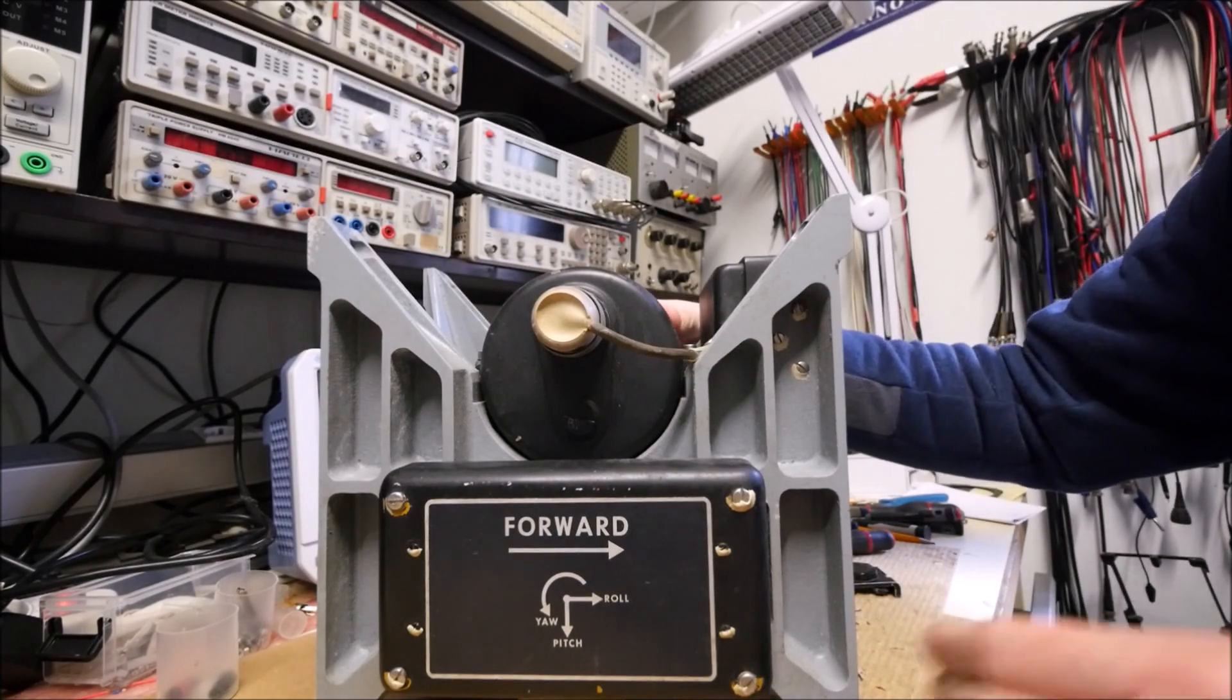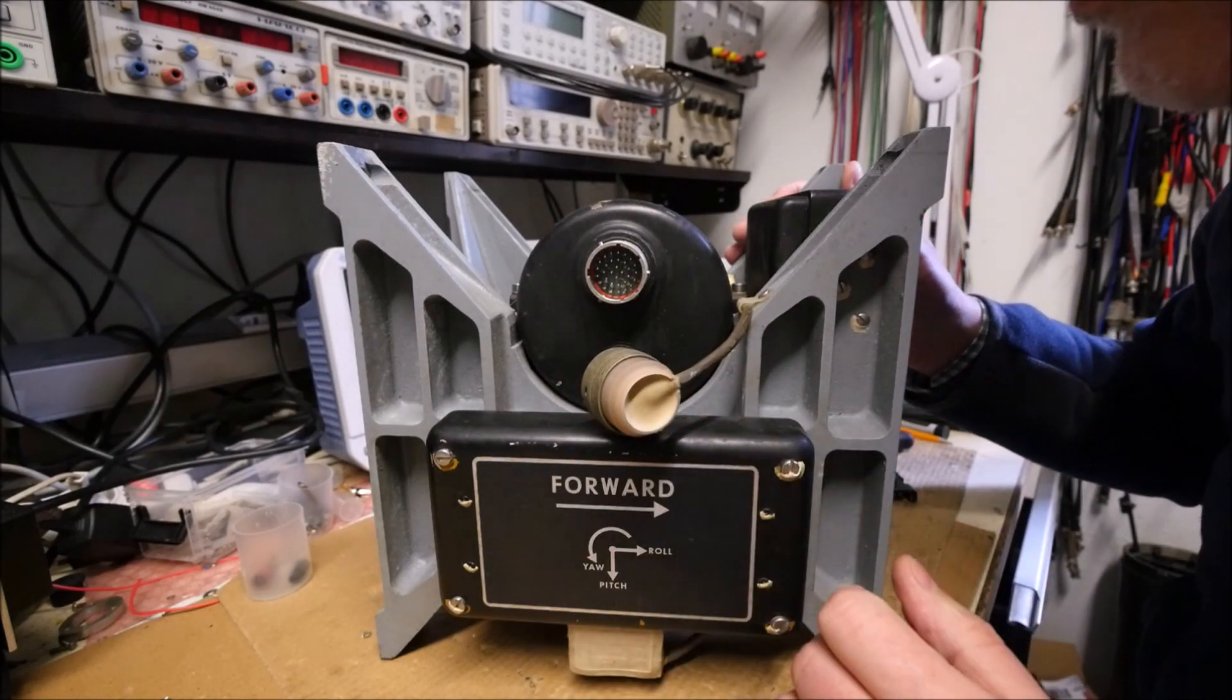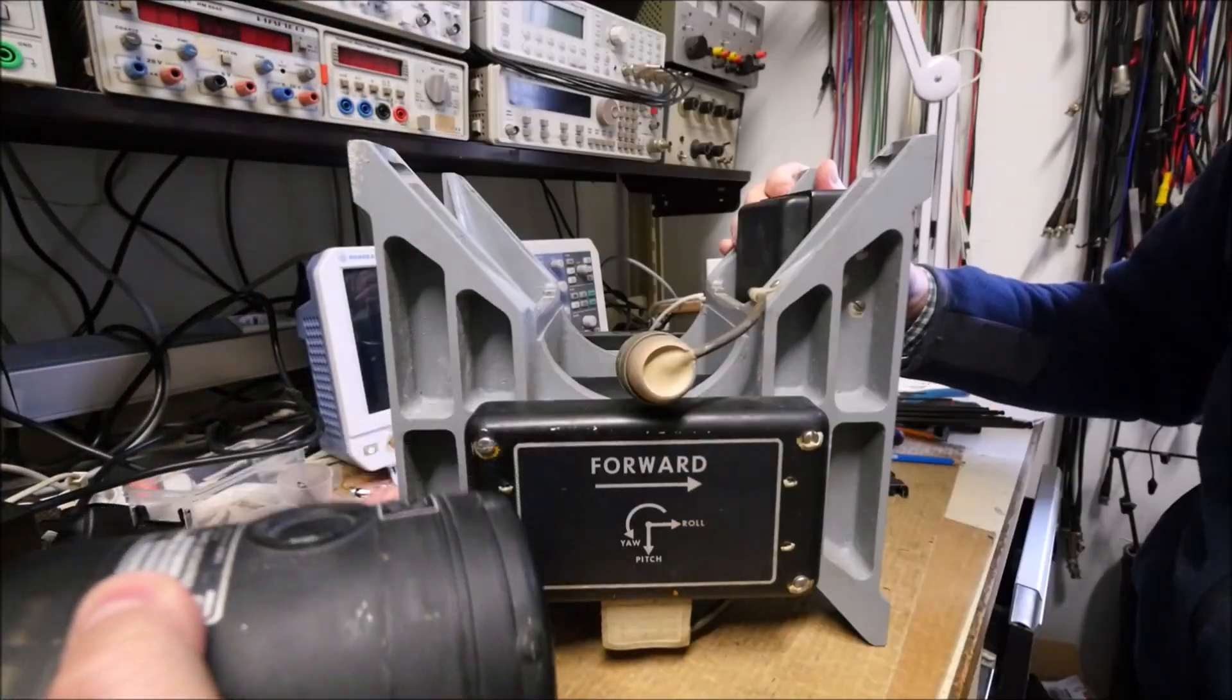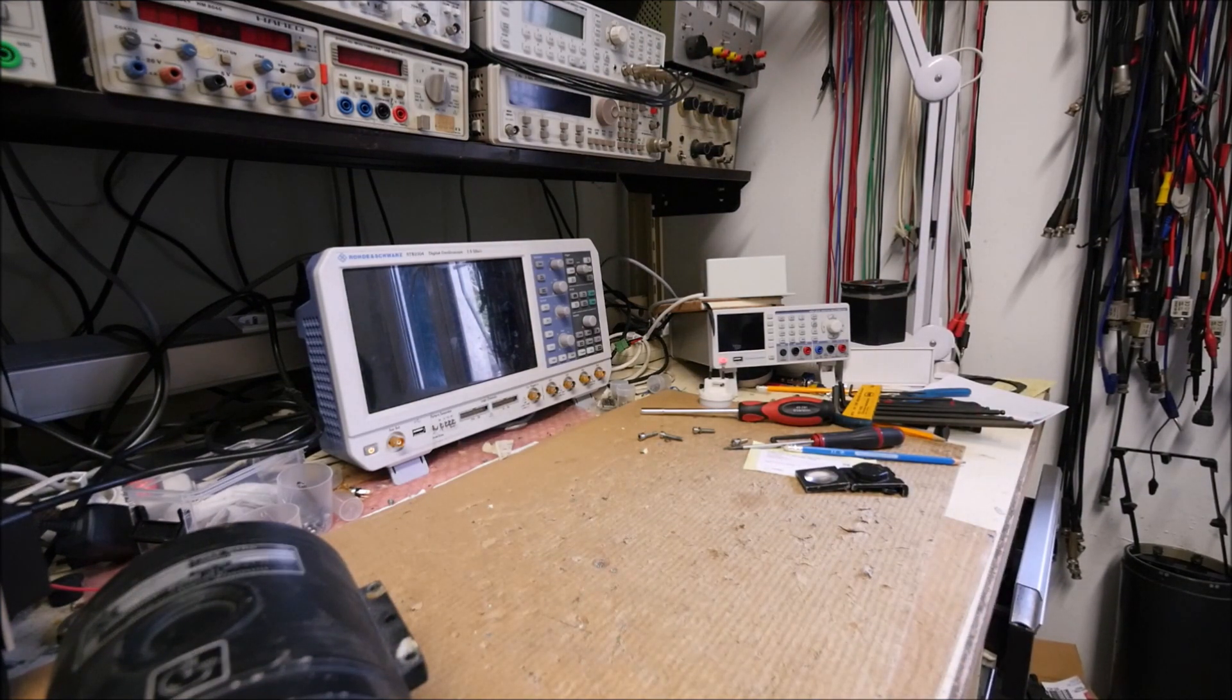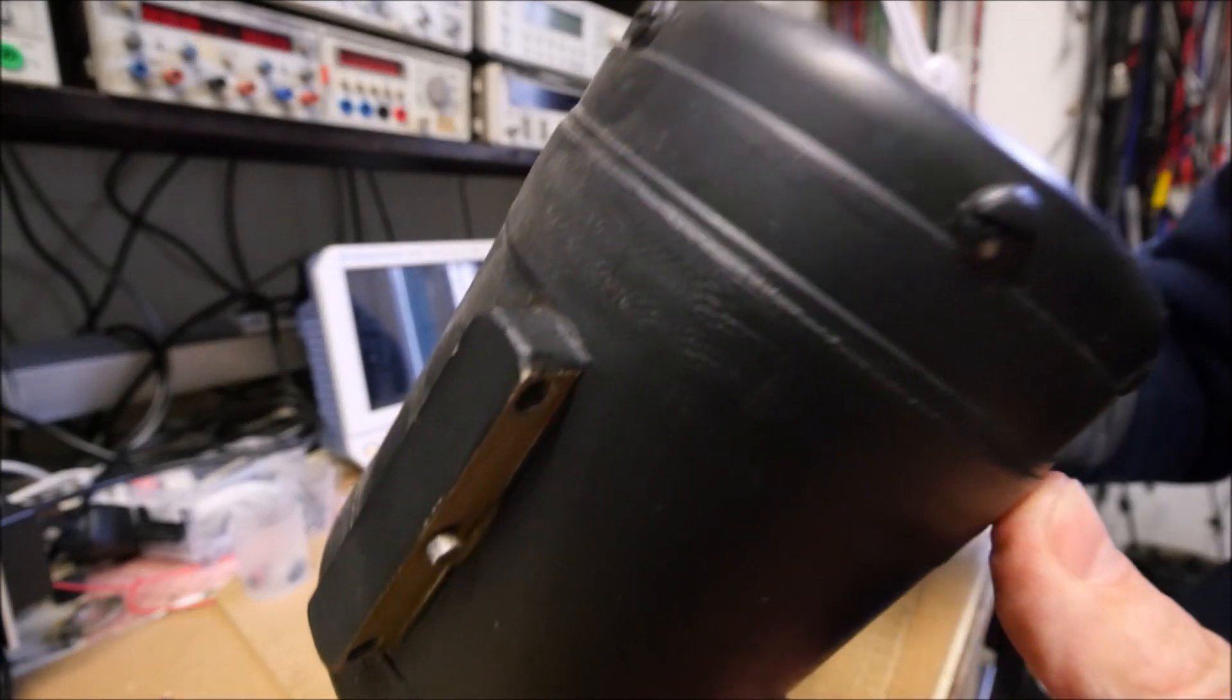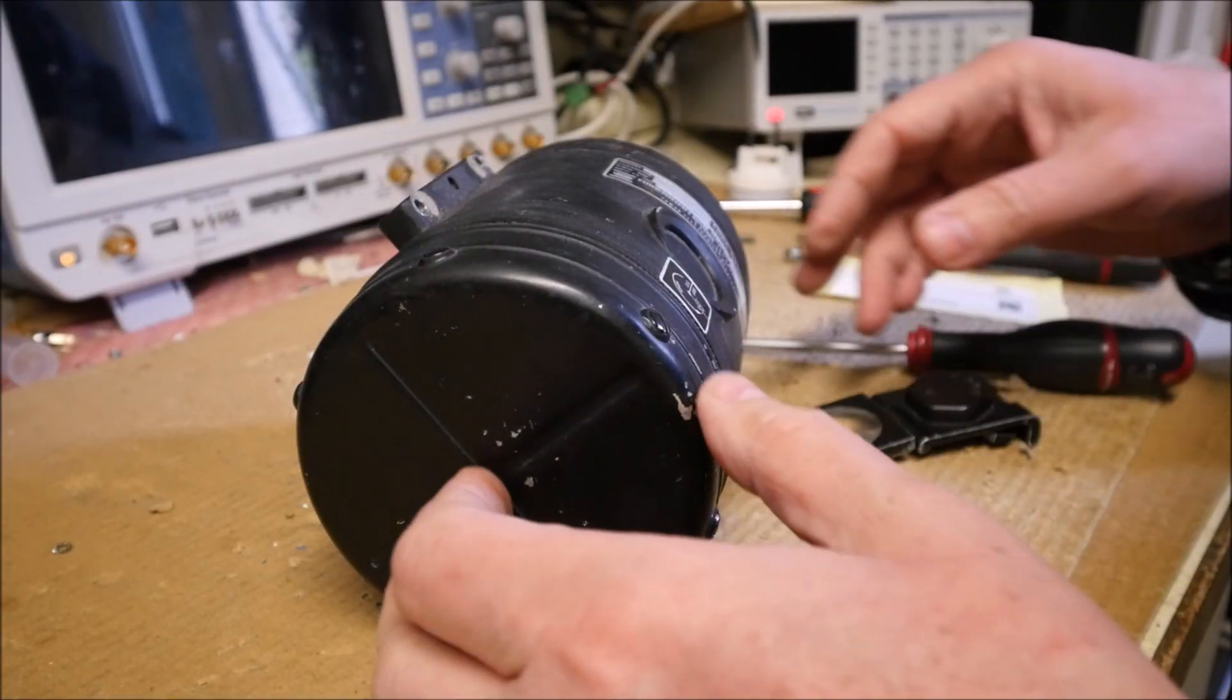So what we can do first is to remove one gyro. And I will try to take it apart. There is also a circular connector here. You can hear a very strange noise. So it seems that the thing is full of oil. I will try to remove this cover.